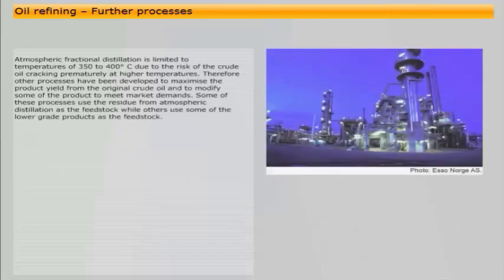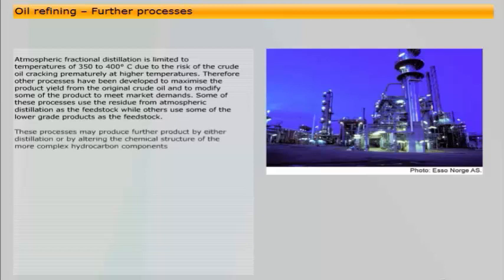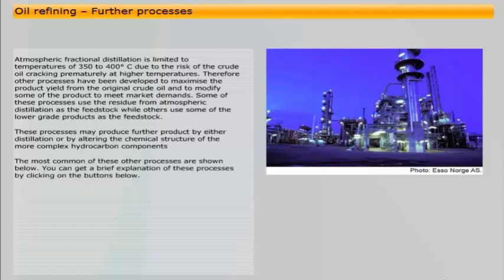Atmospheric fractional distillation is limited to temperatures of 350 to 400 degrees Celsius due to the risk of the crude oil cracking prematurely at higher temperatures. Therefore, other processes have been developed to maximise the product yield from the original crude oil and to modify some of the product to meet market demands. Some of these processes use the residue from atmospheric distillation as the feedstock while others use some of the lower grade products as the feedstock. These processes may produce further product by either distillation or by altering the chemical structure of the more complex hydrocarbon components.